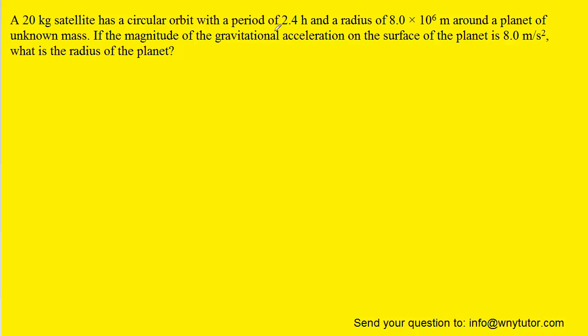In order to begin solving this question, what we want to do is convert the period from 2.4 hours into the standard unit of seconds. Of course, we know that one hour is equivalent to 3600 seconds. And so when we perform this conversion, we should get 8640 seconds for the period.